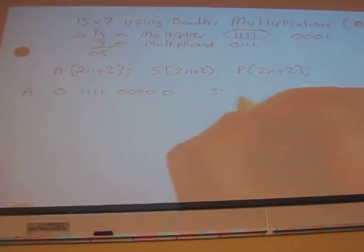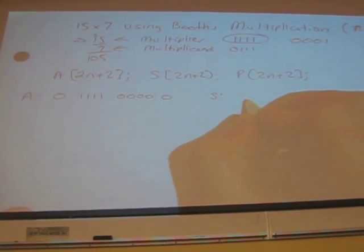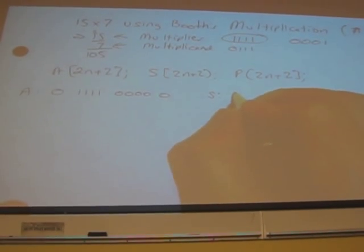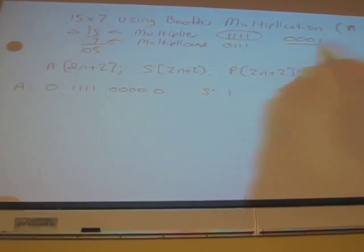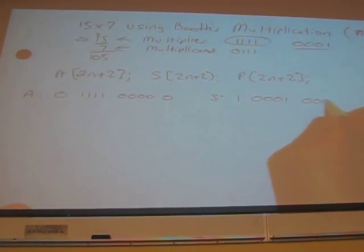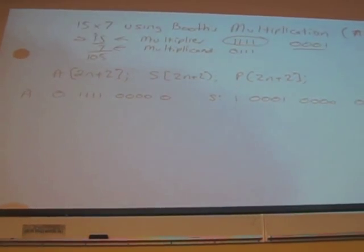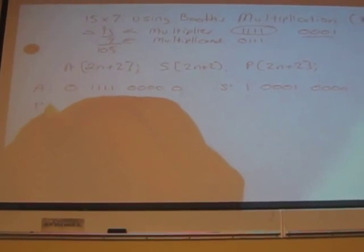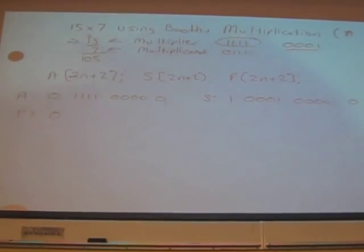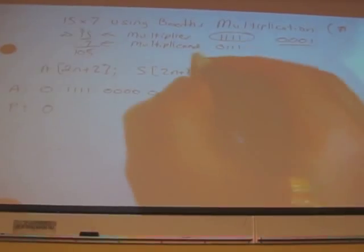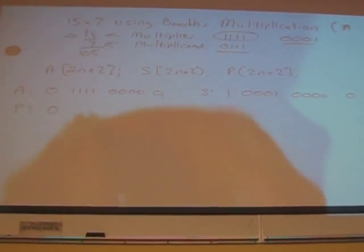S. What bit does it start with? 1. And why is that? Because it's negative. And then you put this value here as the next 4 bits. And then the remaining bits are 0. And then your product. Obviously, it starts with a 0 because it's positive.